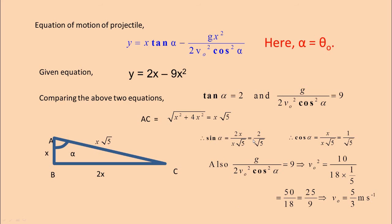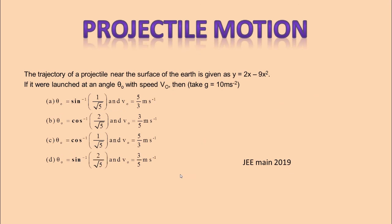So we have got sin α 2 by root 5, cos α 1 by root 5, v₀ value 5 by 3. Therefore the correct option is C. You see in C, you have got θ₀ cos inverse 1 by root 5 and v₀ 5 by 3 meter per second. Then we have a discussion about this problem, which will be very useful in different problems on projectile motion.